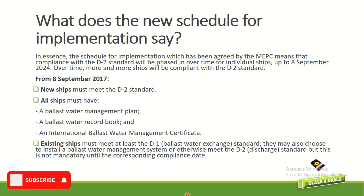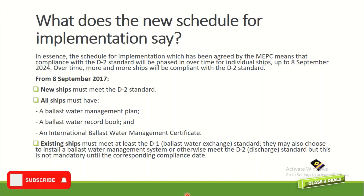What does the new schedule for implementation say? The schedule agreed by the MEPC means that compliance with the D2 standard will be phased in over time for individual ships, up to 8th September 2024. From 8th September 2017, new ships must meet the D2 standard. All ships must have the ballast water management plan, ballast water record book, and an international ballast water management certificate. Existing ships must at least meet the D1 ballast water exchange standard. They may also choose to install a ballast water management system or otherwise meet the D2 discharge standard, but this is not mandatory until the corresponding compliance date.